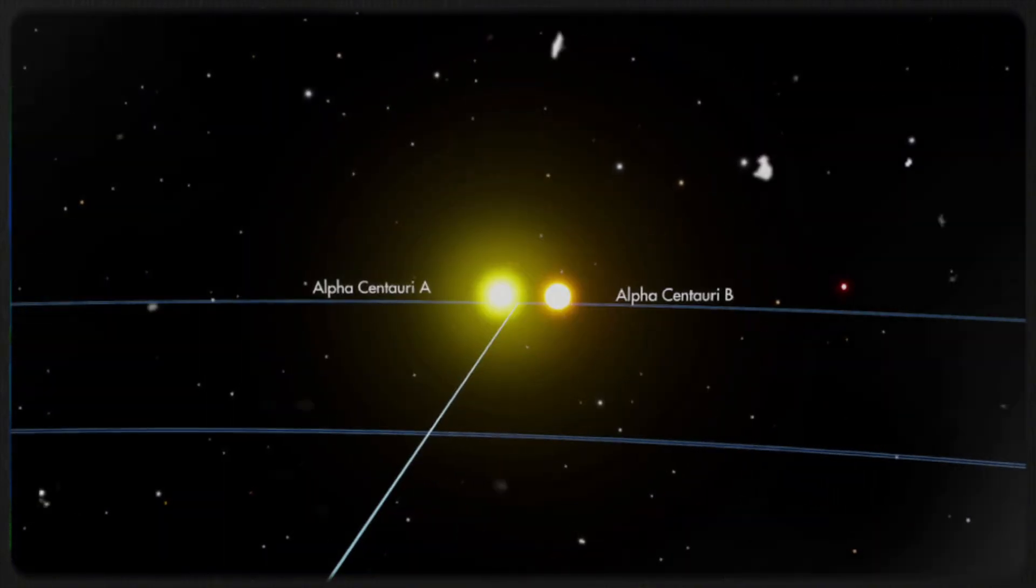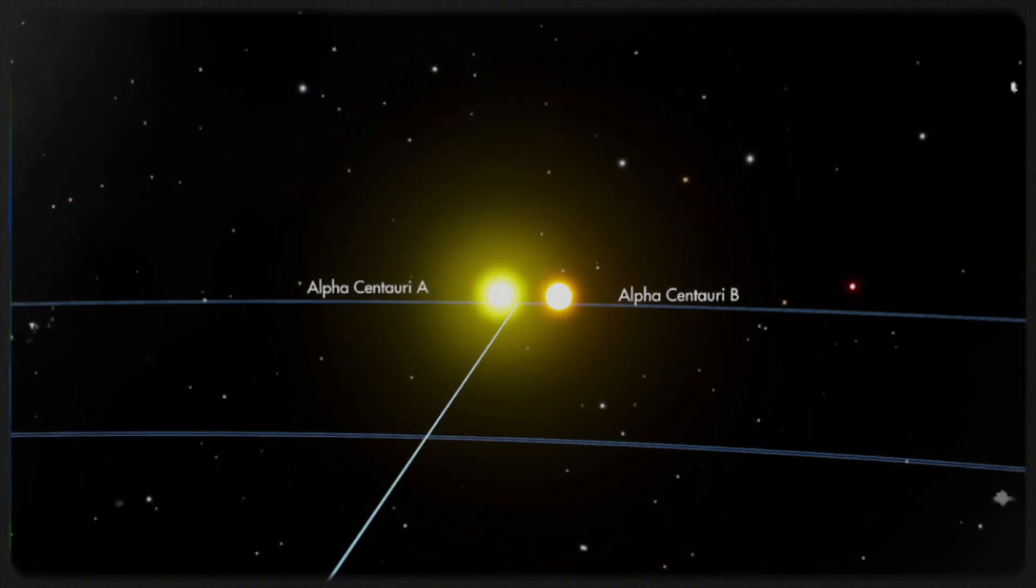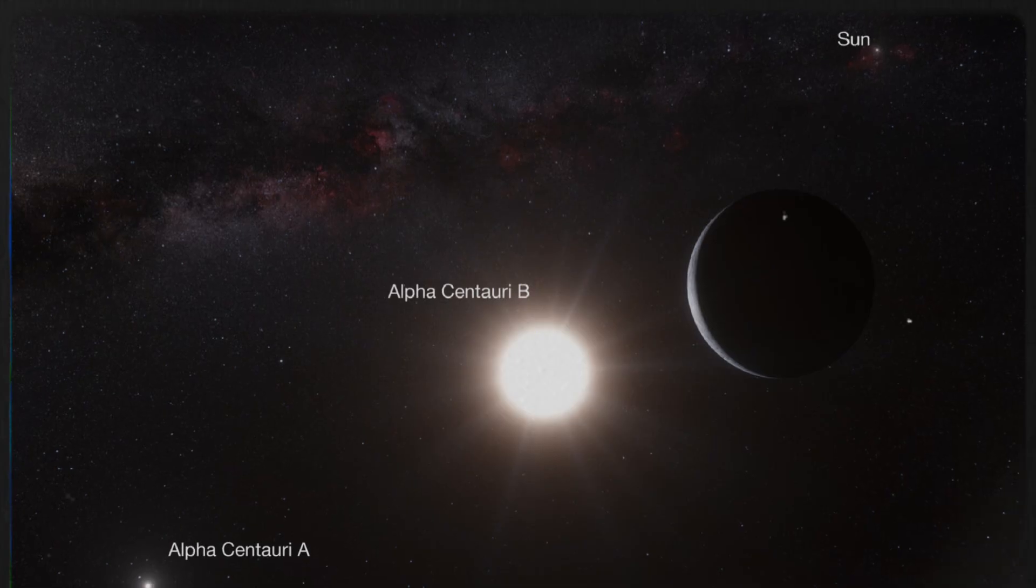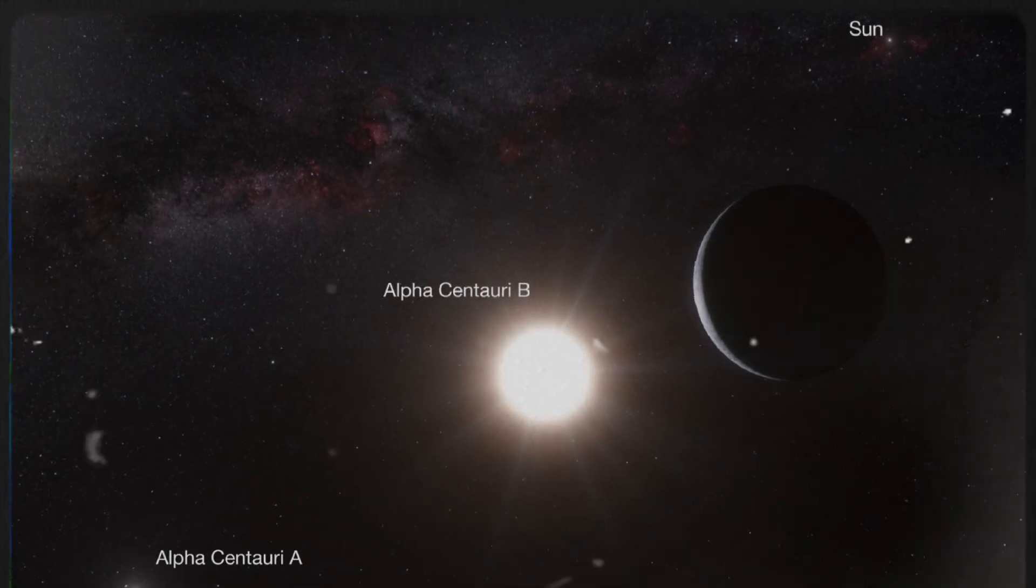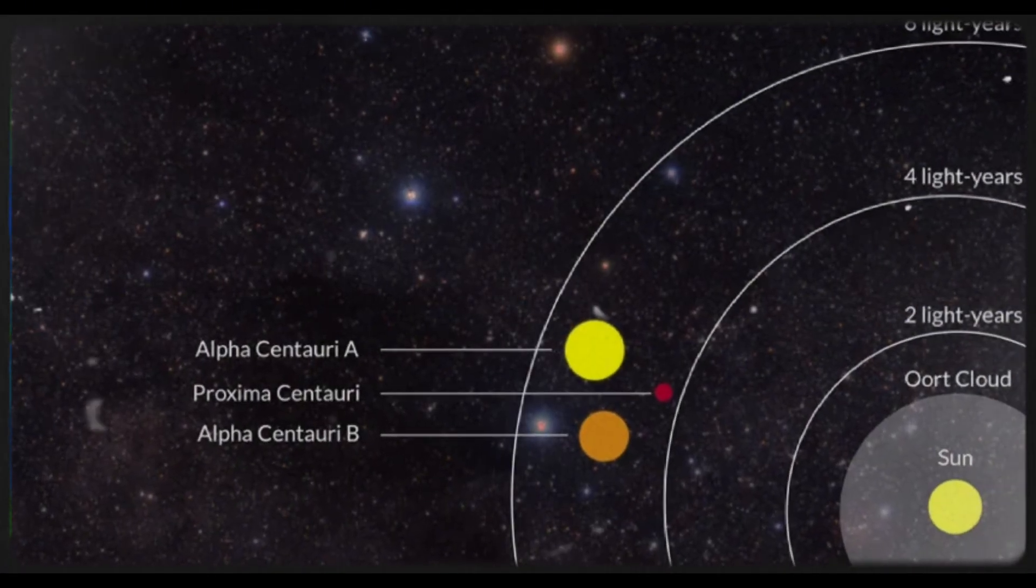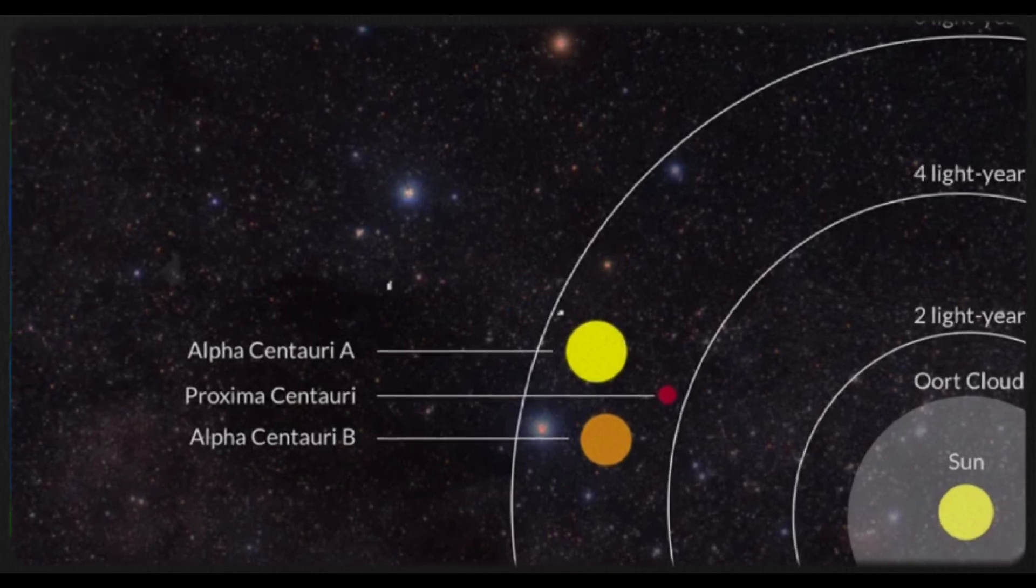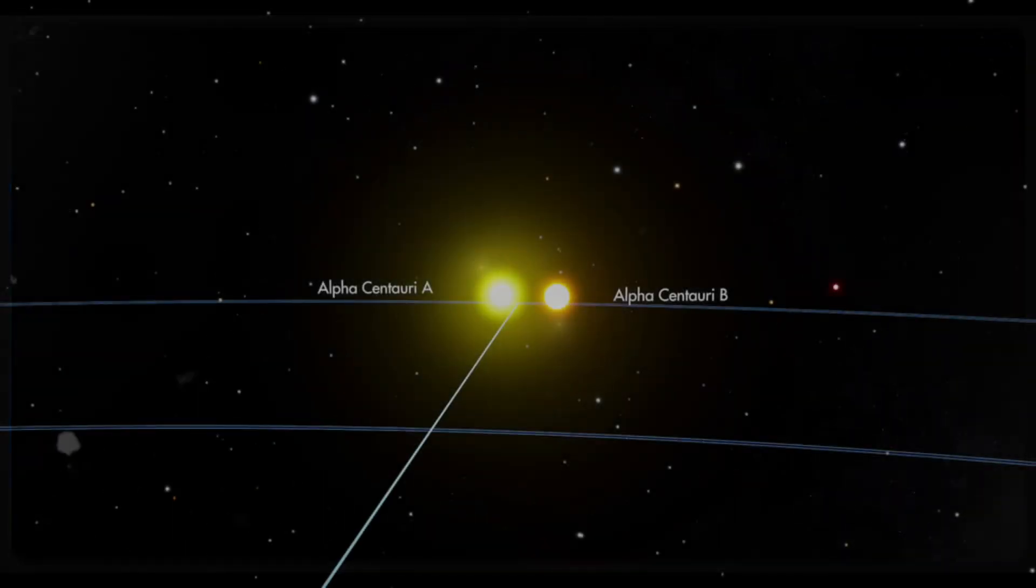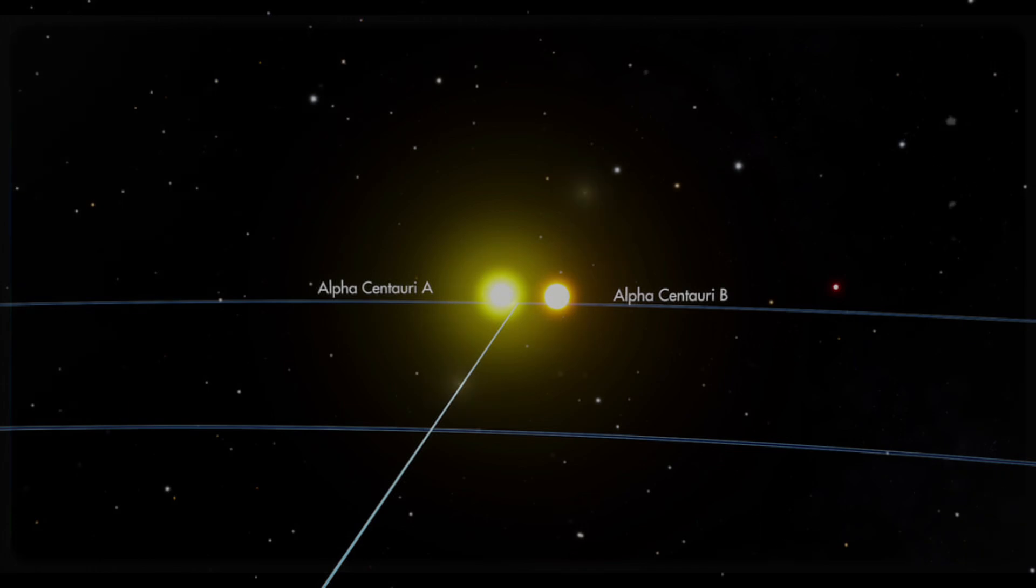Alpha Centauri A emits a yellow light and is 1.5 times brighter than the Sun, while Alpha Centauri B shines with an orange hue and is half as bright. In size, Alpha Centauri A is slightly larger and Alpha Centauri B is smaller, making the Sun's size fall between them. The pair is also older, with an age of approximately 5 billion years.